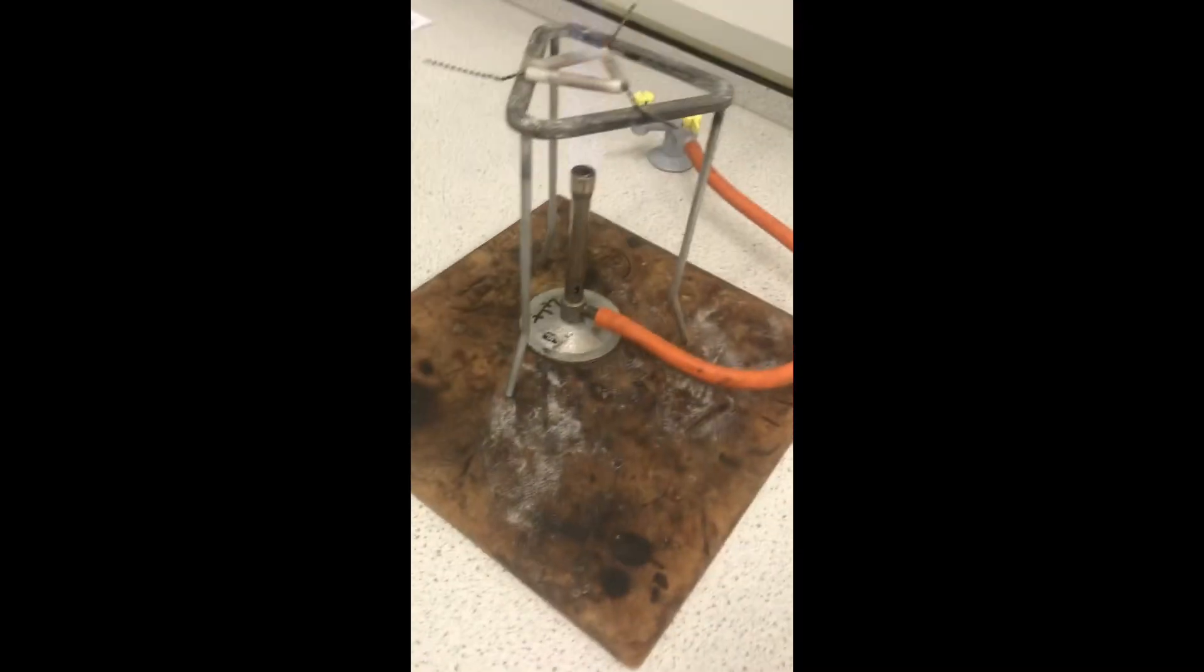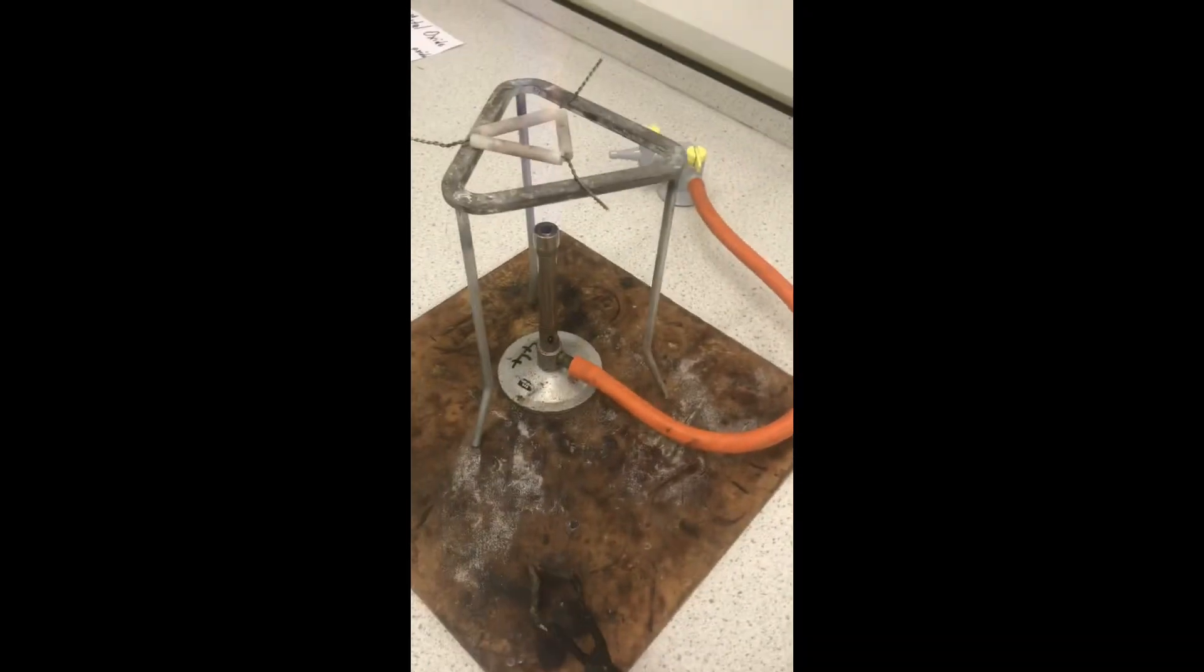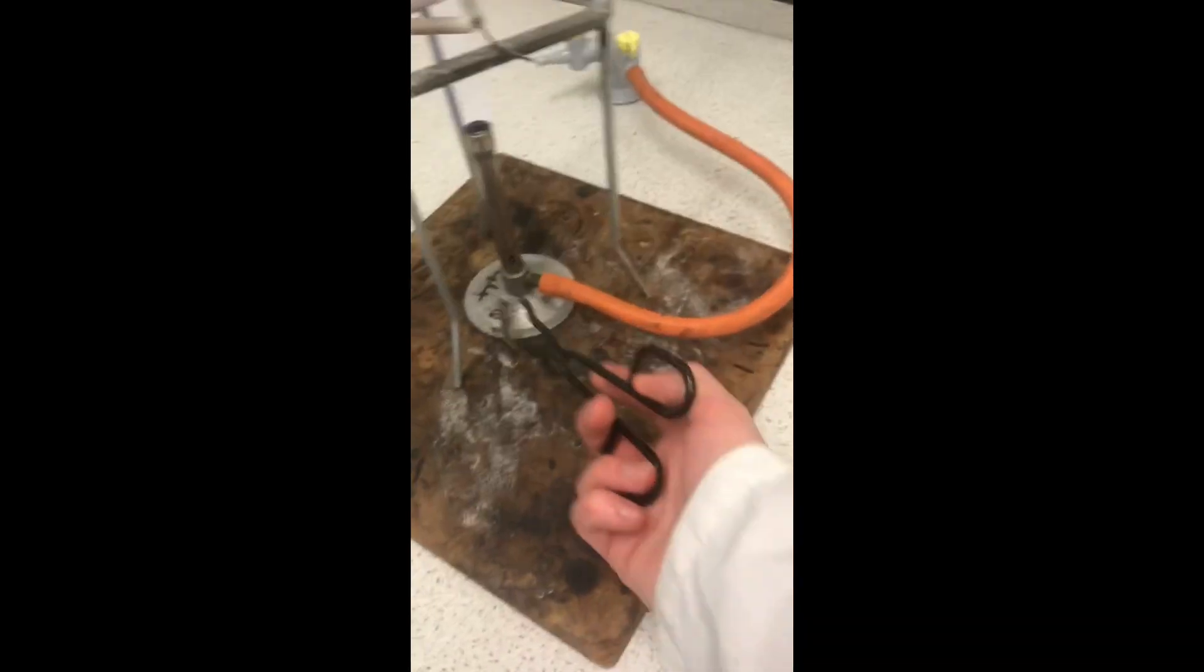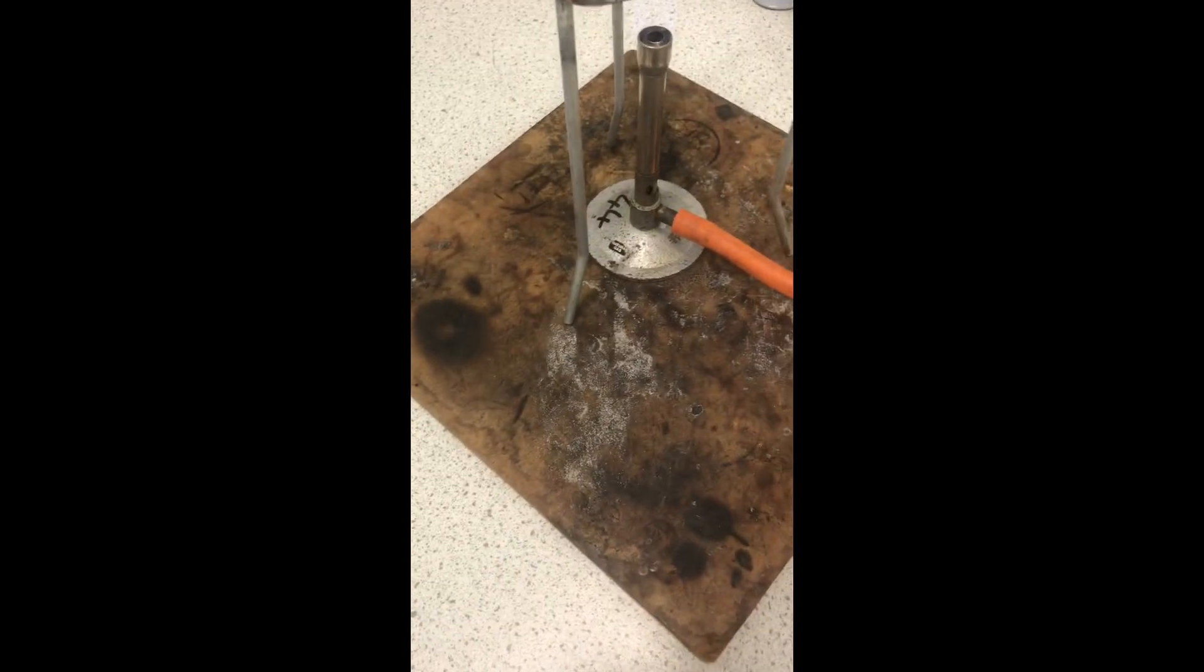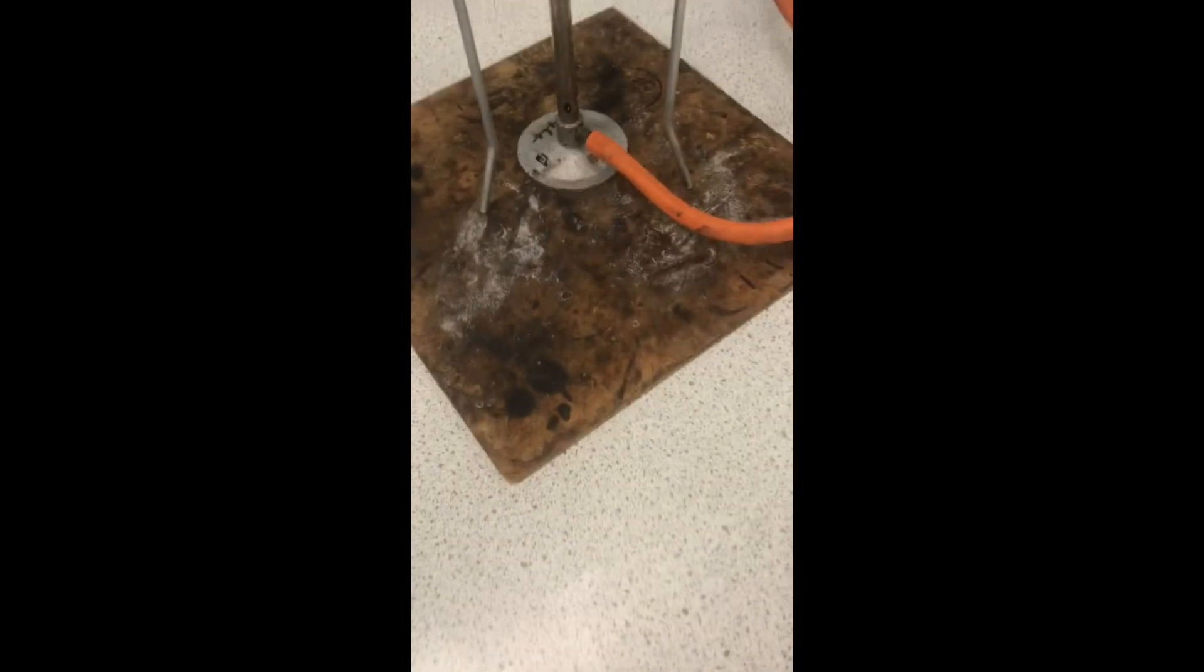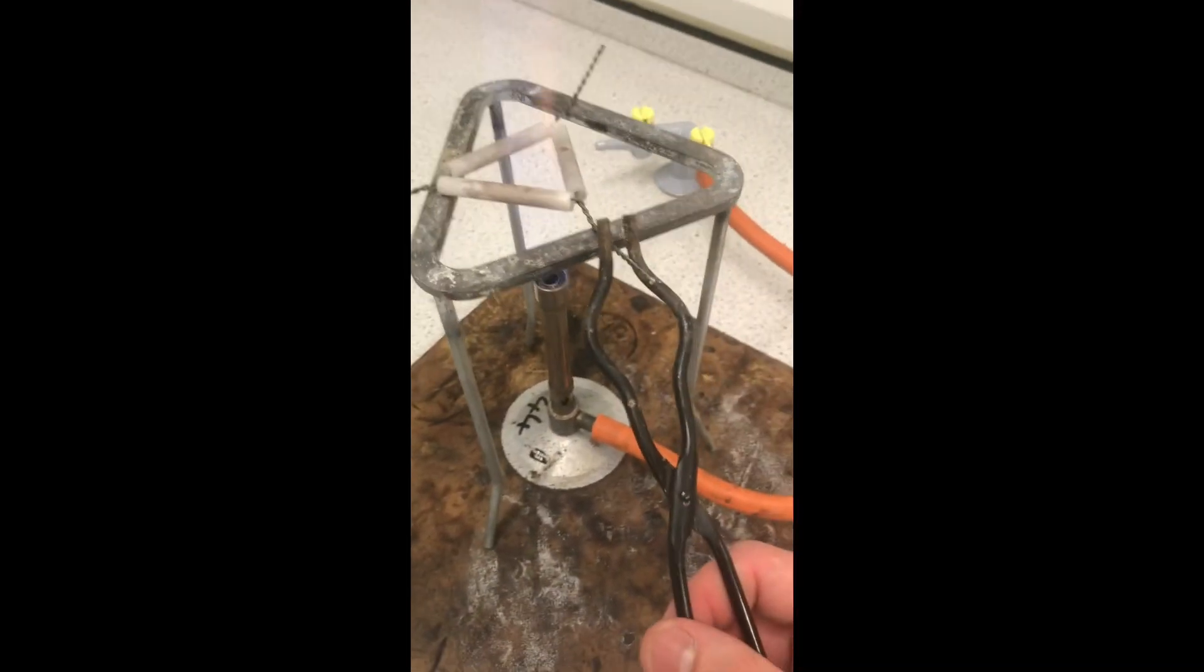So, for my setup for this experiment, we have a heatproof mat with a Bunsen burner, a tripod, and a pipe clay triangle. This is to hold our crucible.